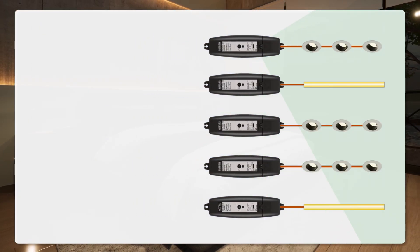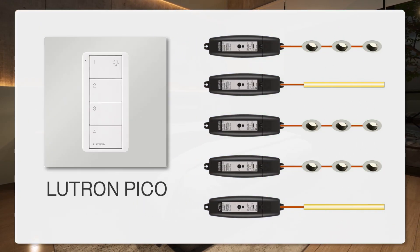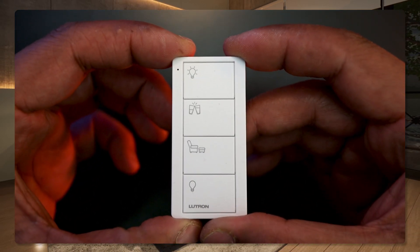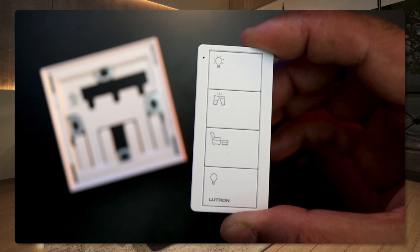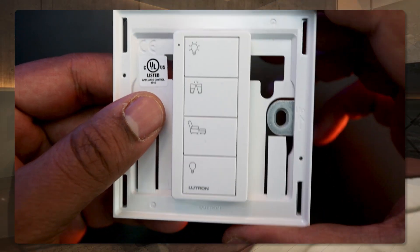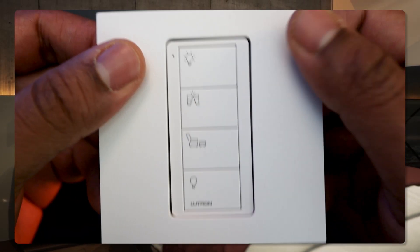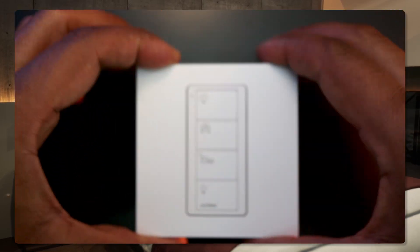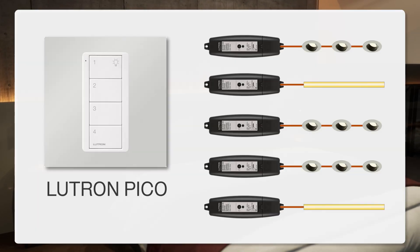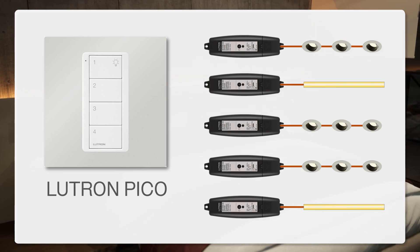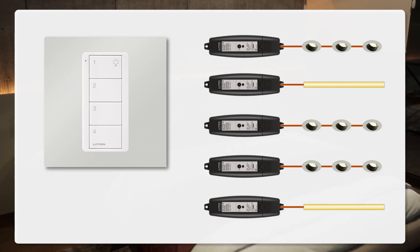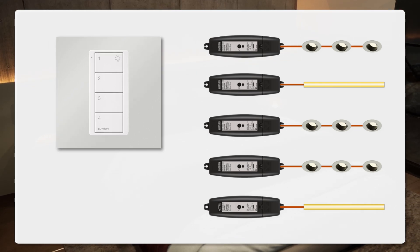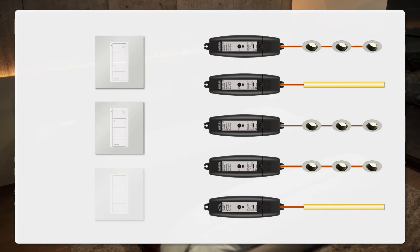Now, to operate your lights, you will use Lutron Picos. A Pico is a small remote control fitted in a faceplate that you can install in place of your traditional switches, or in any other location where you want to control your lights. And it doesn't require any wiring on the back of it. For example, I'll have one Pico by my bedroom door for when I enter the room, and one on each side of the bed for optimal convenience.